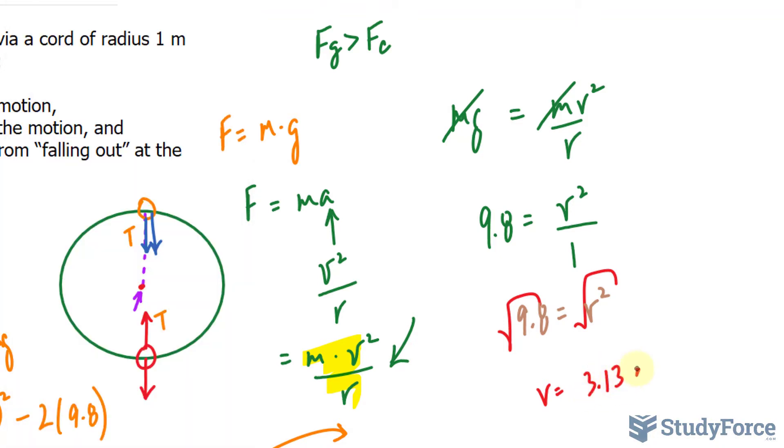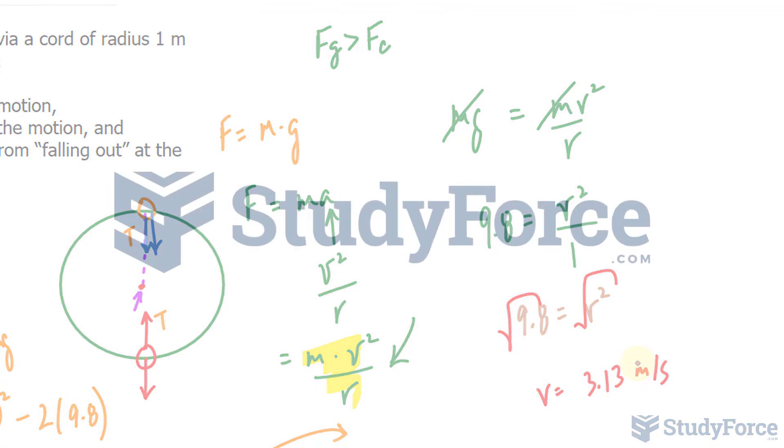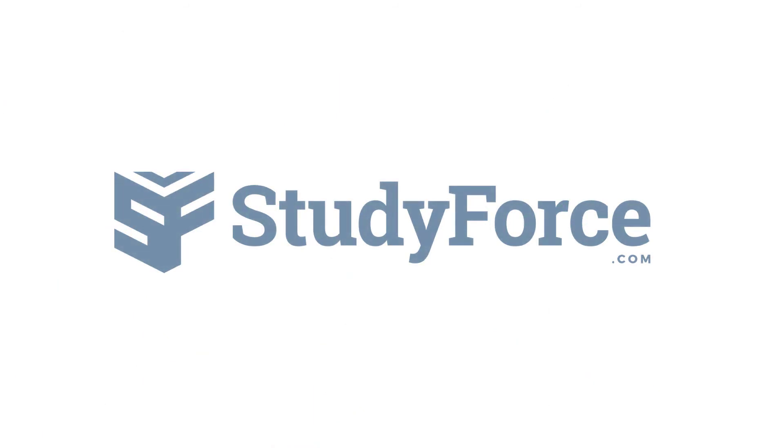3.13 meters per second is the minimum velocity for this thing to remain in this loop without falling out of this circle.